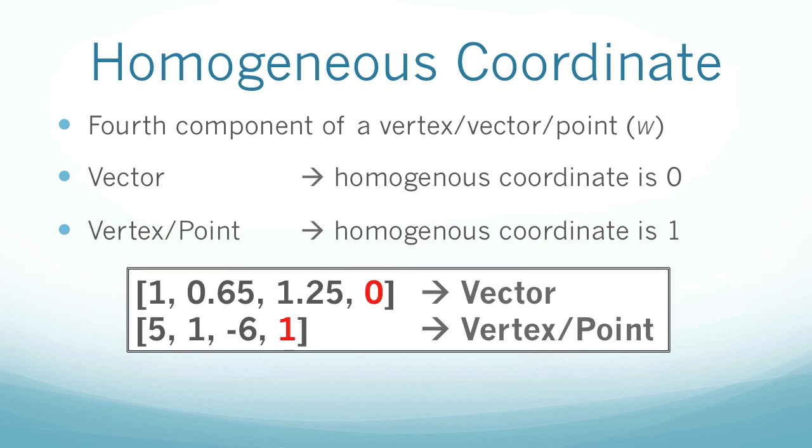Now, for the homogeneous coordinate, we use a homogeneous coordinate to distinguish between vectors, points, and vertices, because the notation of all three is exactly the same. A homogeneous coordinate is the fourth component of a vector, vertex, or point, and it's called w. If it's a vector, then the homogeneous coordinate is zero, and if it's a vertex or a point, the homogeneous coordinate is one. By the way, the first three components are x, y, and z.